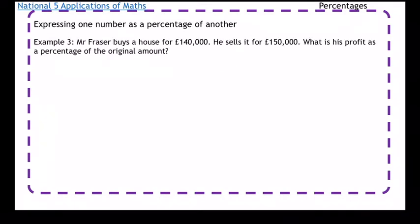Example 3: Mr. Fraser buys a house for £140,000, he sells it for £150,000. What is his profit as a percentage of the original amount? This word 'profit' is quite important because what we actually have to work out is how much profit he's made, and then we can find the percentage.